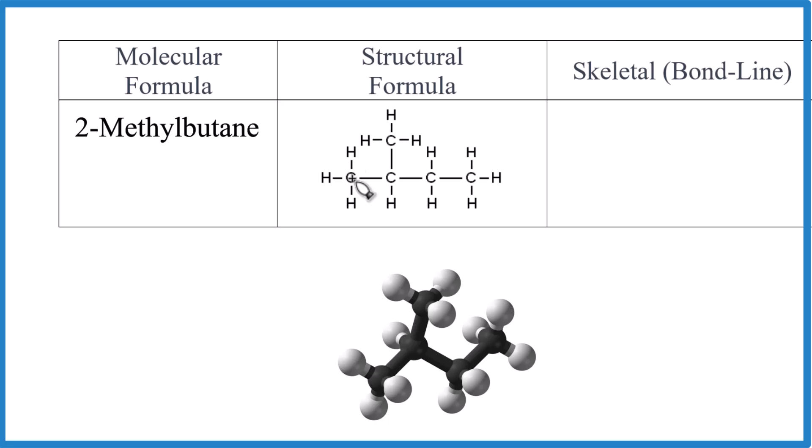So we can just count everything up. One, two, three, four, five carbons. If you count the hydrogens, you'll have 12. That's the molecular formula. We have the structural formula. This one has a branch, a methyl group right here.